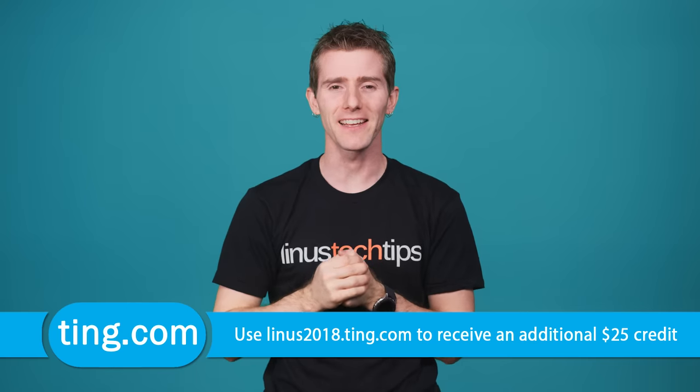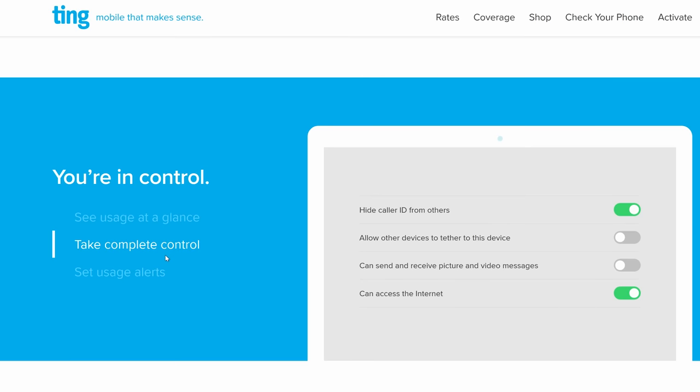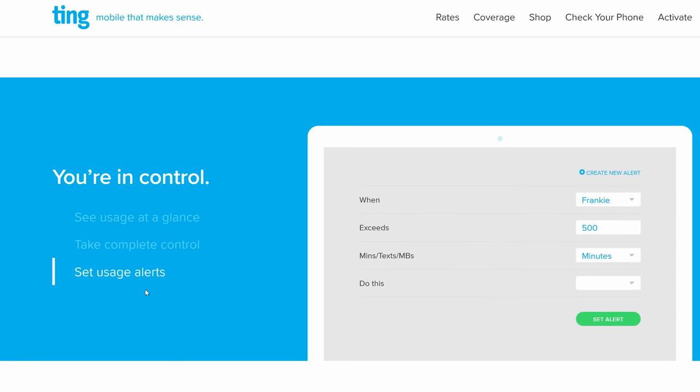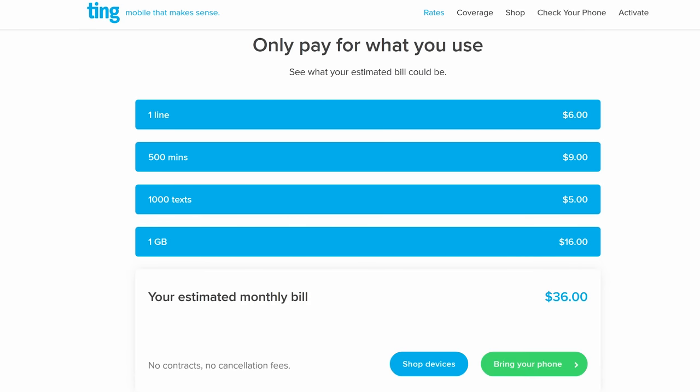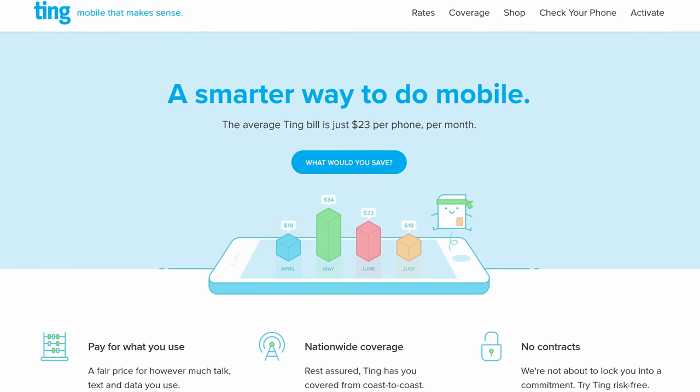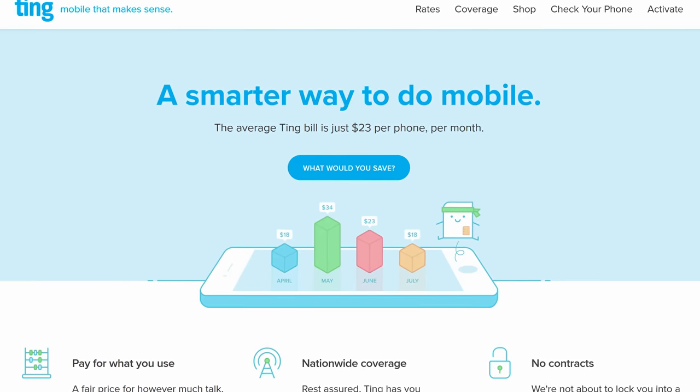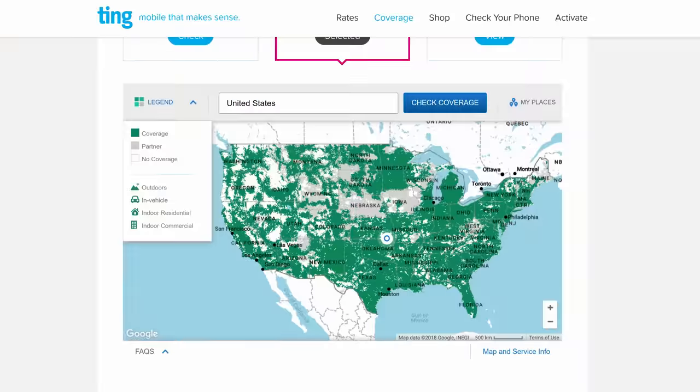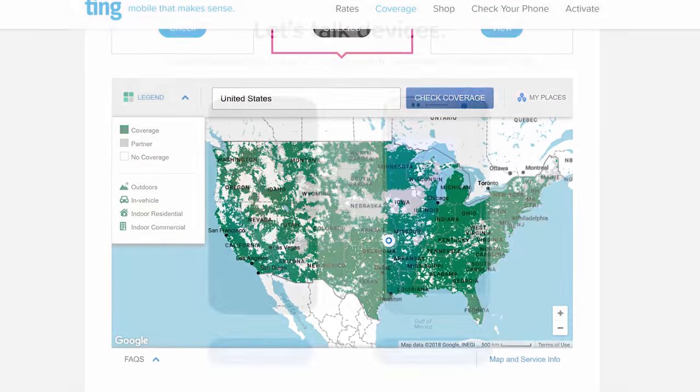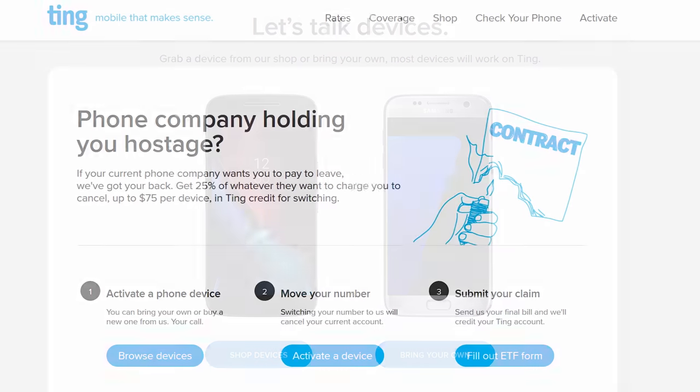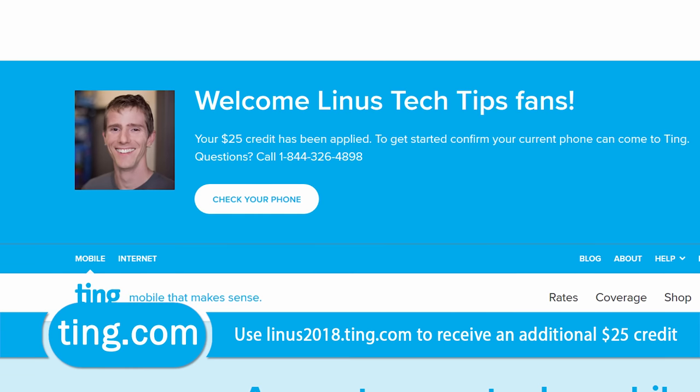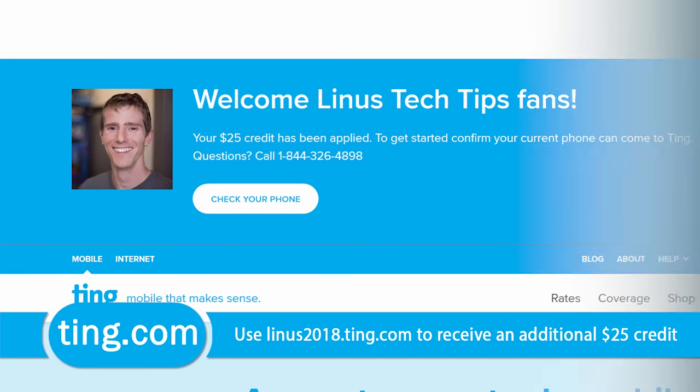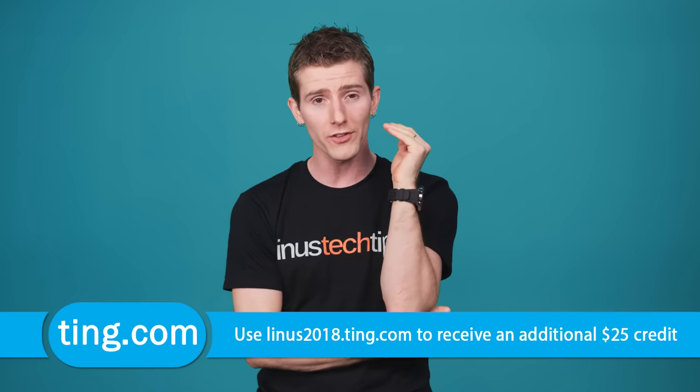This video is brought to you by Ting. Ting does rates, not plans for your cell phone, so you pay just $6 per phone line, plus the minutes, messages, and data you actually use each month. Usage gets shared across all your devices, so the more phones on one Ting account, the less you end up paying per phone. With an average bill of just $23 a month per phone, Ting is the smarter choice for mobile. They offer service on two nationwide LTE networks, so the phone that you already own will likely work with Ting, and there are no contracts and no overage fees, so you can try Ting for a month with no commitments. Check out our link below, linus2018.ting.com to get $25 off your bill or towards a new device.